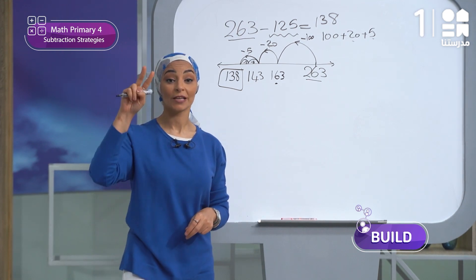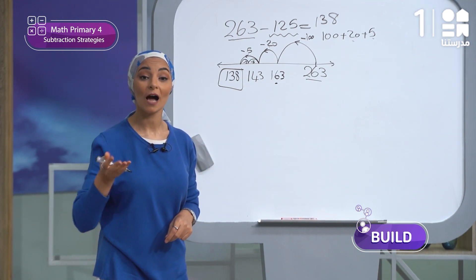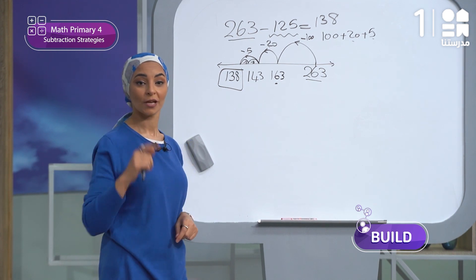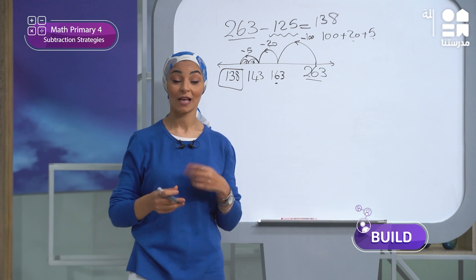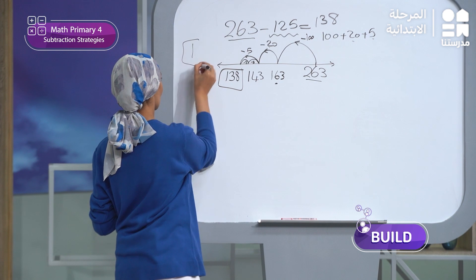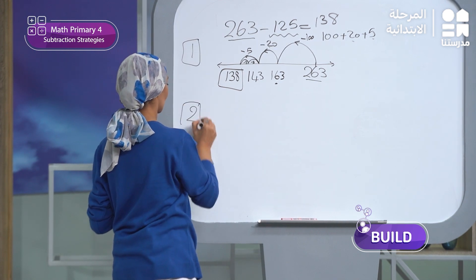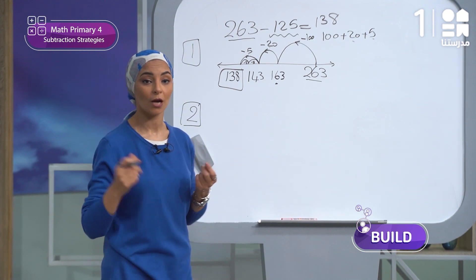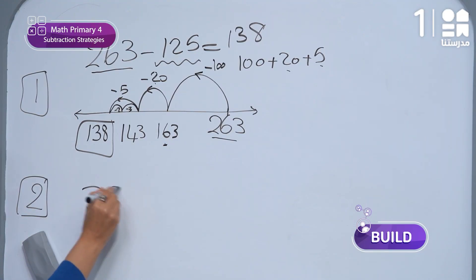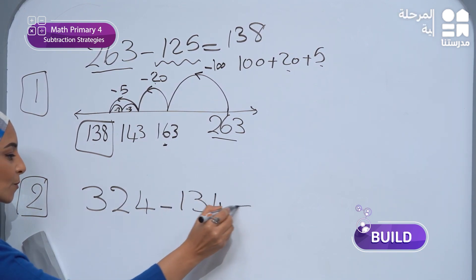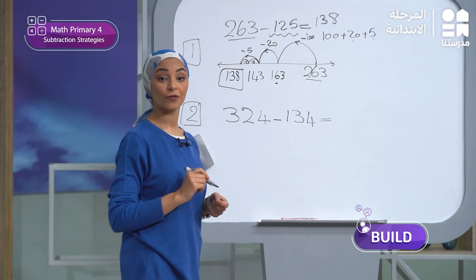Now we will use the second strategy, which is counting up with the composition. Here we will do something different. Look at the following example. I want to subtract 324 minus 134. Write with me, solve it with me.